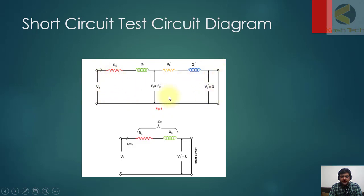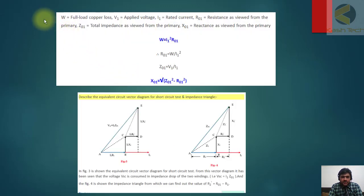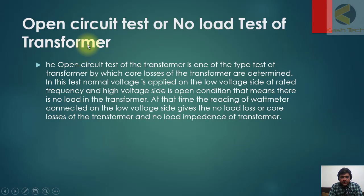The short circuit test circuit diagram shows the applied voltage, the short circuit connection, and resistances R1, X1, R2, X2. These are combined to represent the total resistance and leakage reactance of both primary and secondary windings under short circuit conditions. A vector diagram is also shown to illustrate how the losses are calculated. Our next test is the open circuit test, or no-load test, of the transformer.